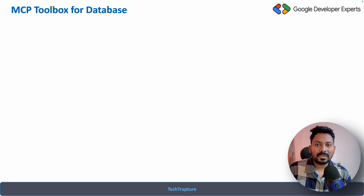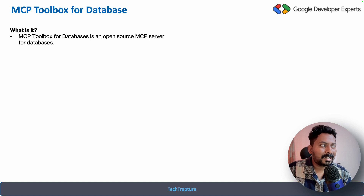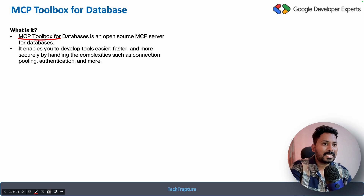So how is it going to work? We are going to work with the MCP toolbox for database. Earlier it was called the GenAI toolbox for database, but now it is renamed as the MCP toolbox for database, where you can easily create tools and create a secure connection to the database from your GenAI agent.